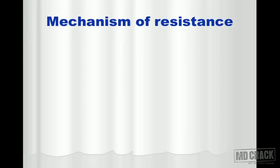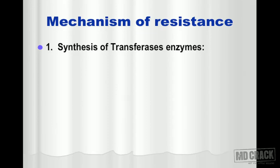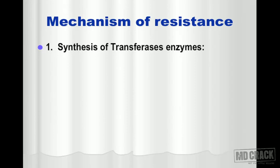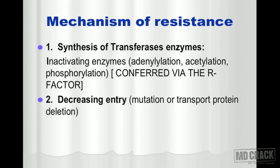The first resistance mechanism is that microorganisms synthesize inactivating enzymes — called transferases. These enzymes produce either adenylation, acetylation, or phosphorylation of aminoglycosides, and this type of resistance is conferred via R factor. The second mechanism is decreasing the entry of the aminoglycoside into the bacterial cell, which can result from mutation or deletion of the transport protein, preventing aminoglycoside from being brought inside the cell.